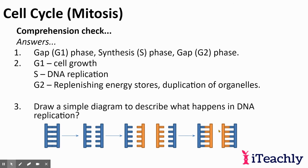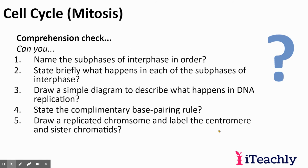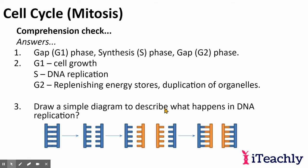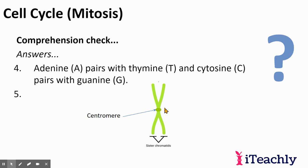So, name the sub-phases of interphase in order: that would be G1 for growth and normal metabolic roles, S phase where the DNA gets copied, and G2 where you're getting everything ready to go into mitosis. Also, the centromere is where the spindle fibers are going to be attached, and this is what holds the two sister chromatids together.